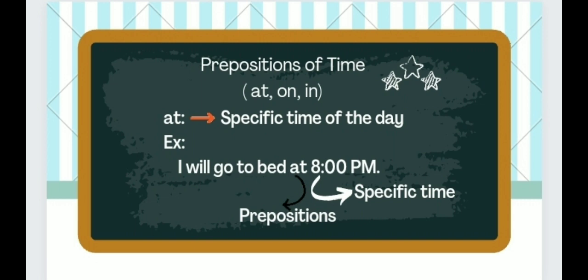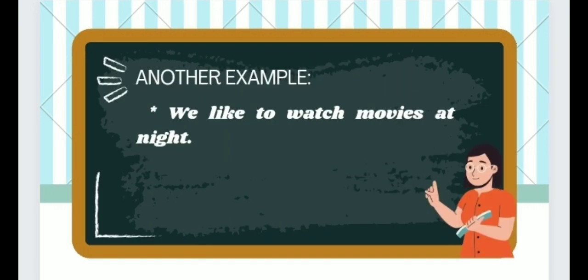We use 'at', 'on', and 'in' for prepositions of time. 'At' is used when referring to a specific time of the day. For example: 'I will go to bed at eight o'clock PM' — 'at' is the preposition and 'eight o'clock PM' is the specific time. Another example: 'We like to watch movies at night' — 'at' is the preposition and 'night' is the specific time of the day.